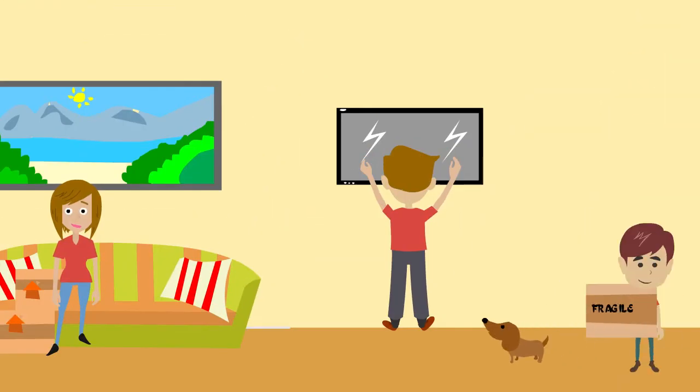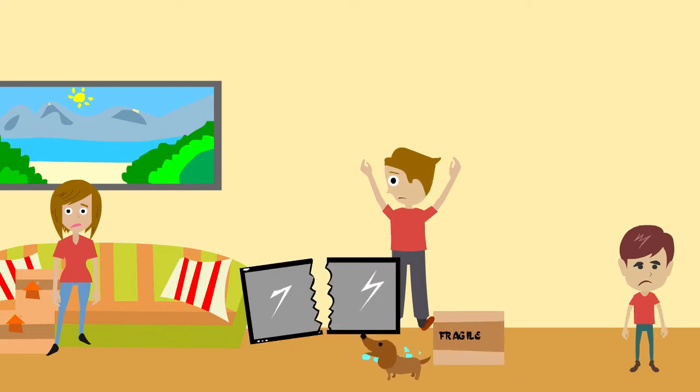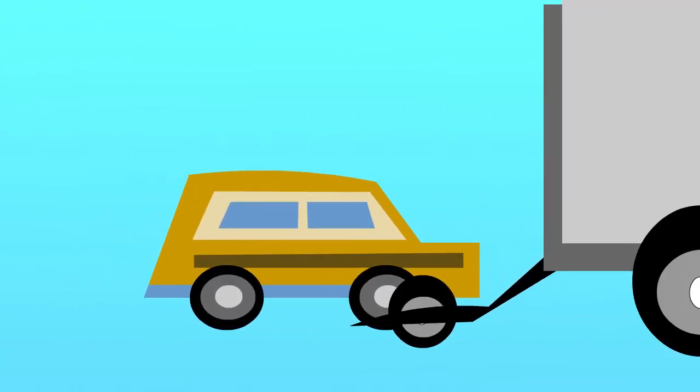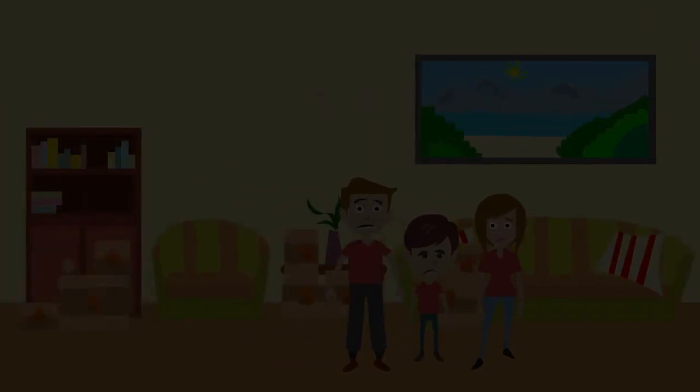Mr. Peterson is attempting to take his TV off the wall. Now he's trying to pull their car on the car dolly. They finally make it to their new home and realize their electricity hasn't been turned on.